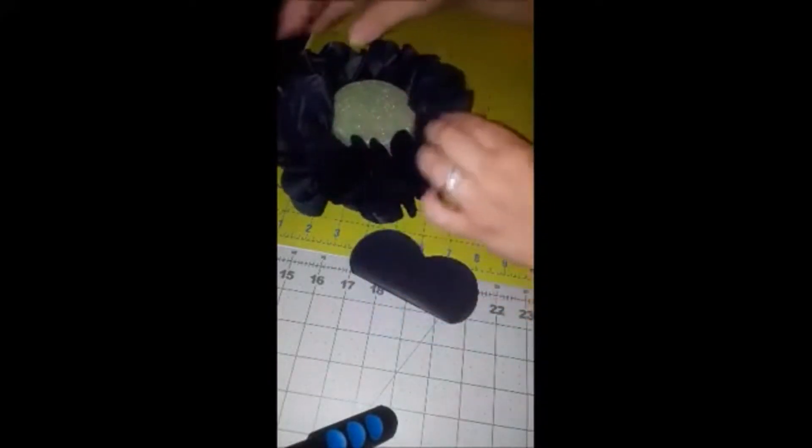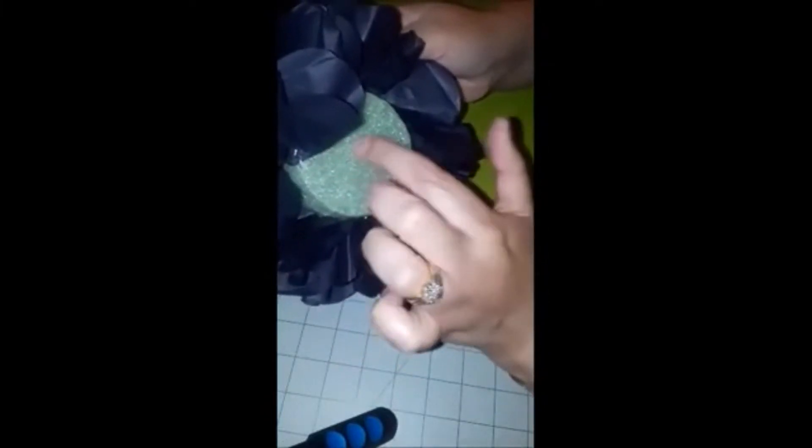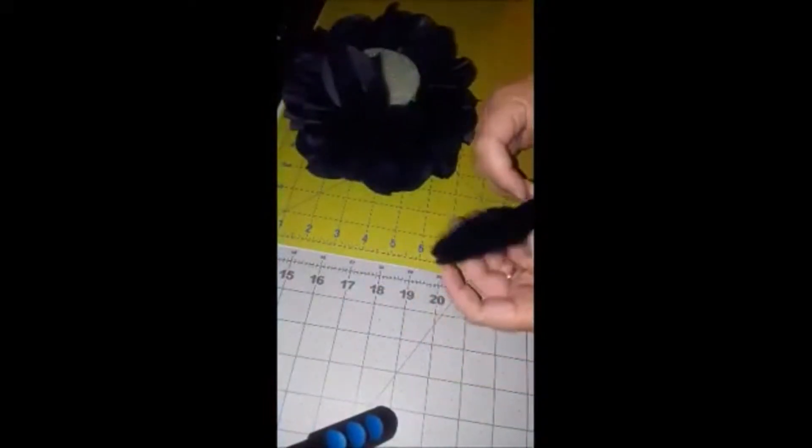Now we're starting right on the edge of that foam, literally pinned right here on the edge. We're going to do that all the way around, and then probably do a few, two or three, in the middle here at the very end because it's going to start to form the shape.